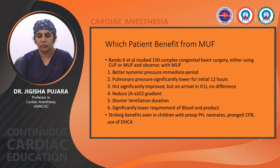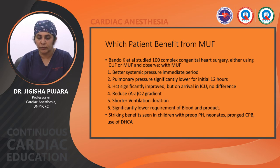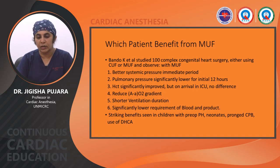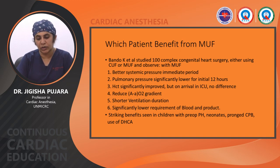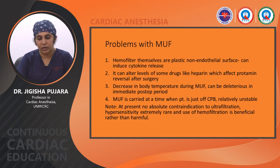Which patients benefit from MUF? Bendo et al. studied 100 complex congenital cardiac surgery patients using either CUF or MUF and observed that with MUF: better systemic pressure in the immediate period, significantly lower pulmonary pressure within the initial 12 hours, significantly improved hematocrit but no difference on ICU arrival, reduced alveolar-arterial oxygen gradient, shortened ventilation duration, and significantly lower requirement for blood and blood products. Striking benefits were seen in children with pre-existing pulmonary hypertension, neonates, prolonged CPB, and use of DHCA.